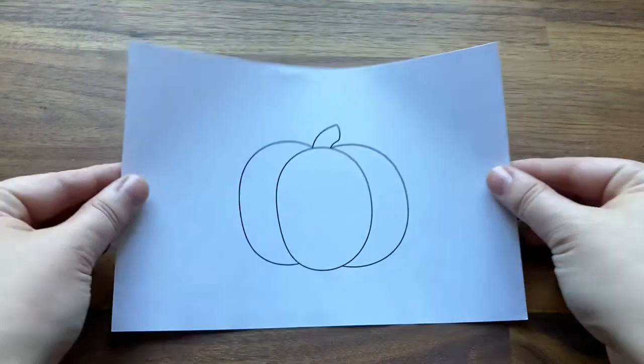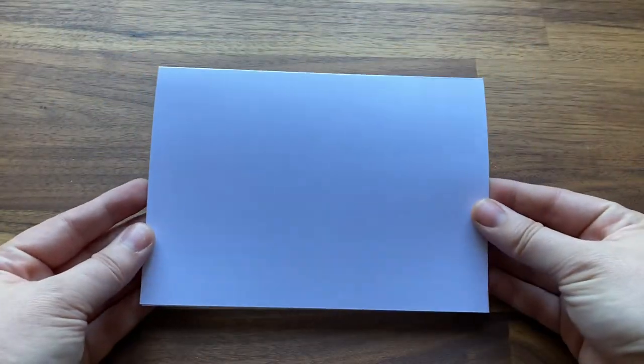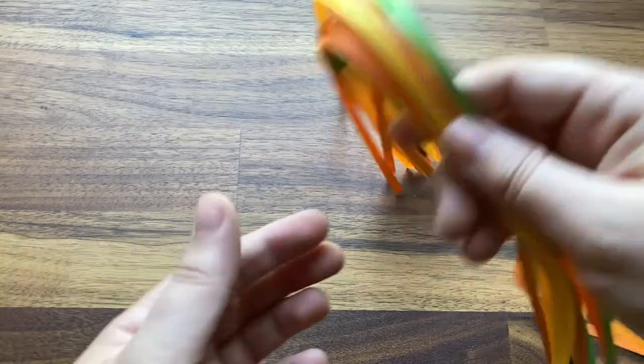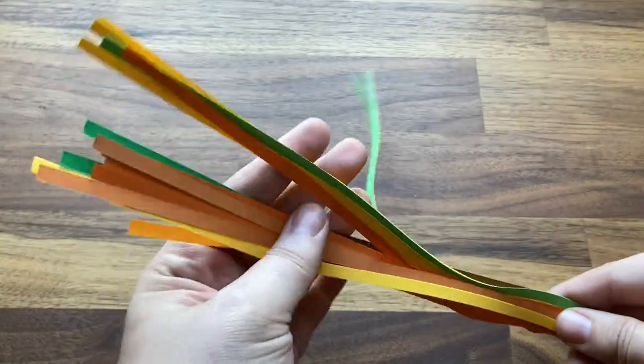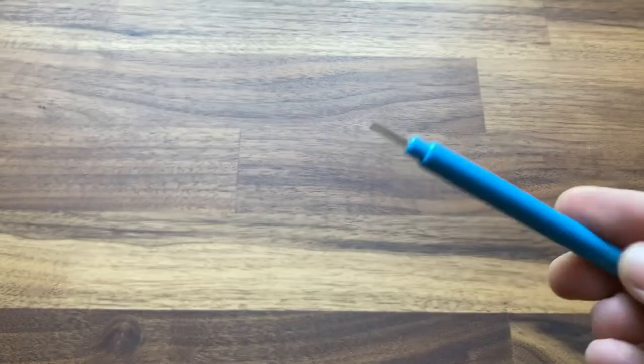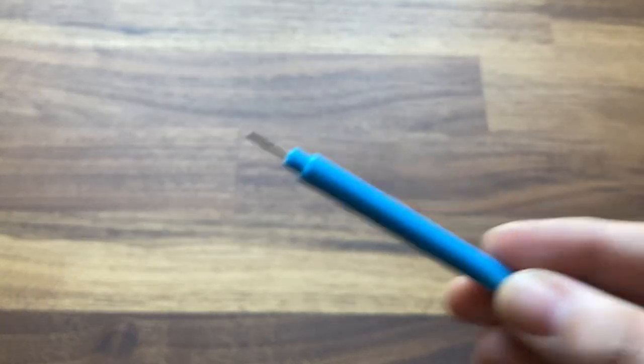Each kit includes one printed pumpkin template, one folded piece of white cardstock, approximately 22 quilling paper strips in shades of orange, green and brown, each one measuring about 21 inches, and one standard quilling tool.